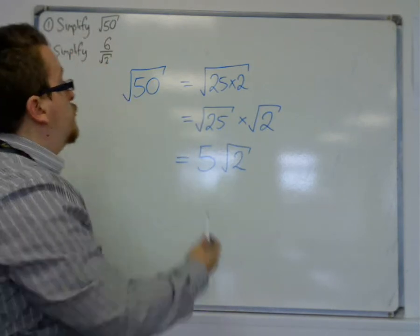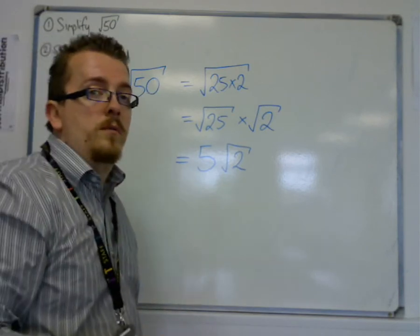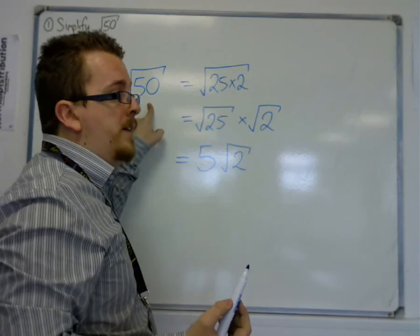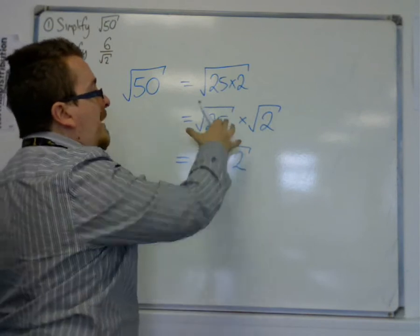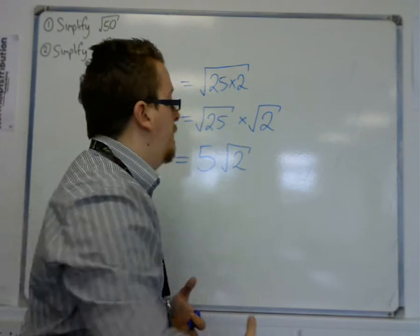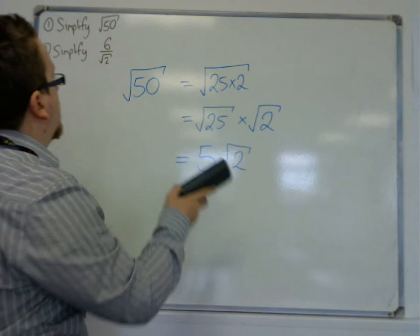It's all about first trying to find the square number that goes into that number in question, so in our example 50. Break that surd apart to allow you to then simplify the square root of the square number, and rewrite it as 5 root 2 in this case. Let's look at the second example.